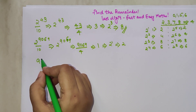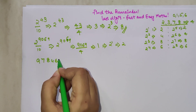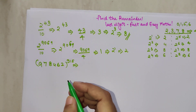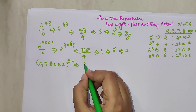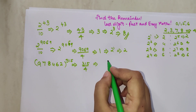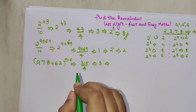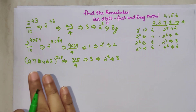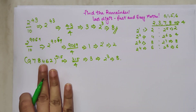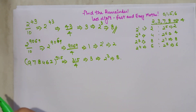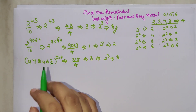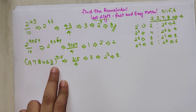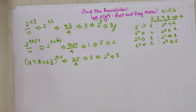Now for a bigger question: 978462 raised to 315 — find the last digit. Simply divide 315 by 4; the remainder is 3. So the last digit is 2 cubed = 8. The key principle: no matter how large the base number, you only need to look at the units digit. Since the units digit here is 2, we apply the same rule. If the units digit were 0, 1, 5, or 6, you'd apply the principles from the previous video.